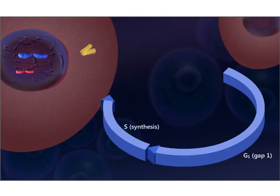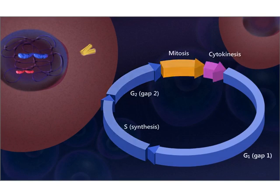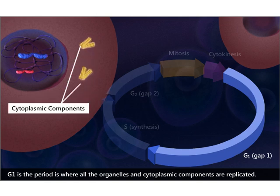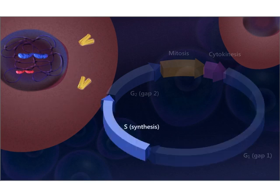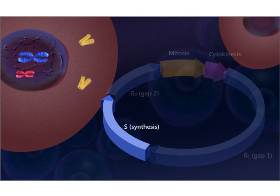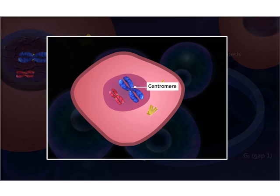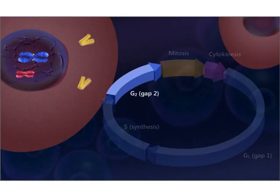There are three stages in interphase: G1 or Gap 1, S or Synthesis, and G2 or Gap 2. G1 is the period where all the organelles and cytoplasmic components are replicated. During stage S, the chromosomes including the DNA begin to replicate, resulting in two identical copies of chromosomes called sister chromatids, attached to each other at a point called the centromere. During G2, organelles and other enzymes required for cell division are formed.